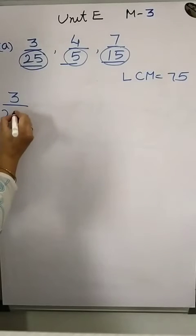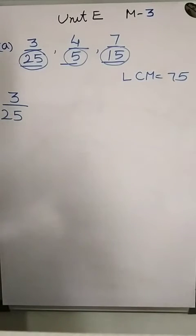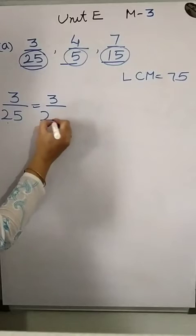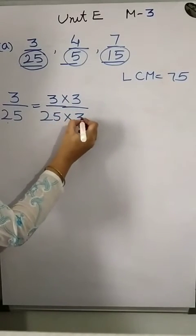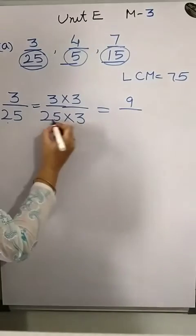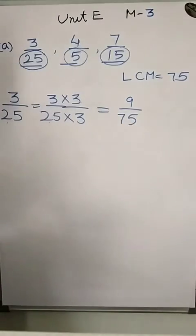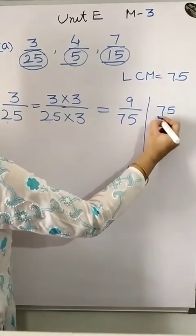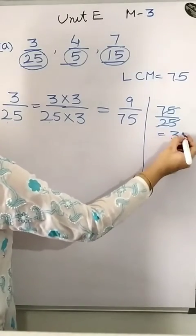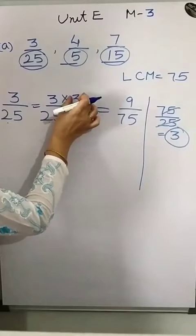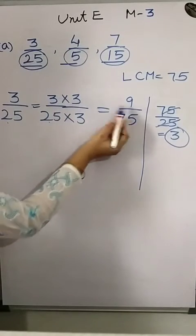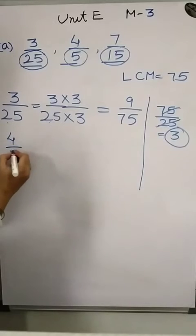For 3 upon 25: divide 75 by 25 to get 3, so multiply by 3 upon 3. This gives 9 upon 75. For 4 upon 5: divide 75 by 5 to get 15, so multiply 4 upon 5 by 15 upon 15. This gives 60 upon 75.